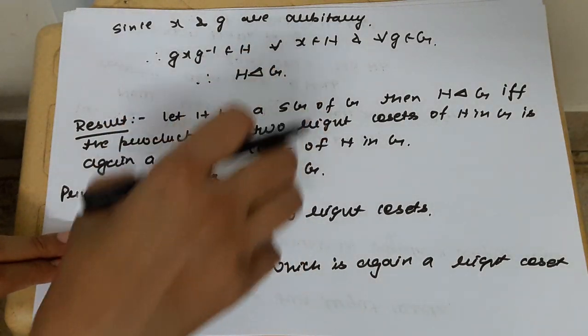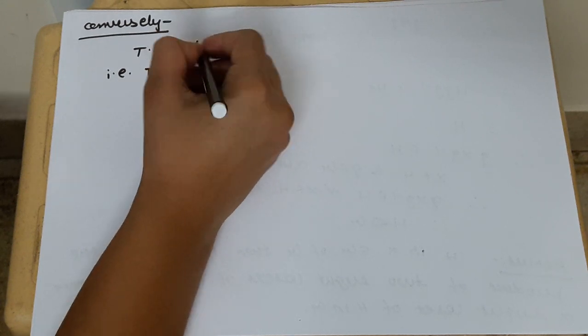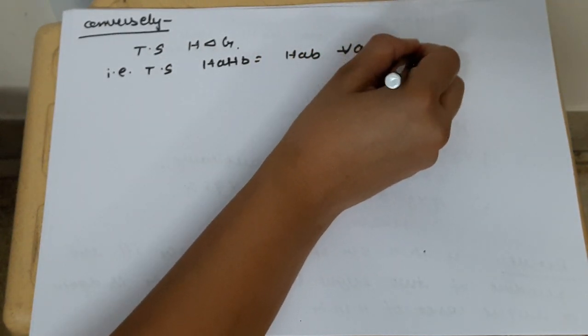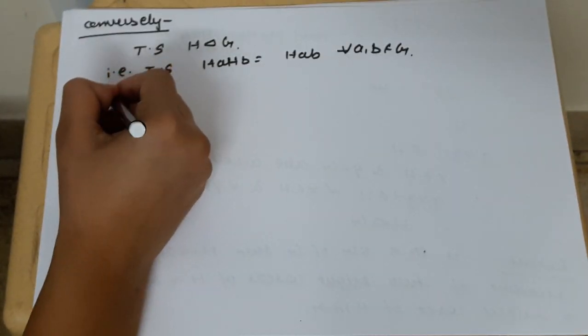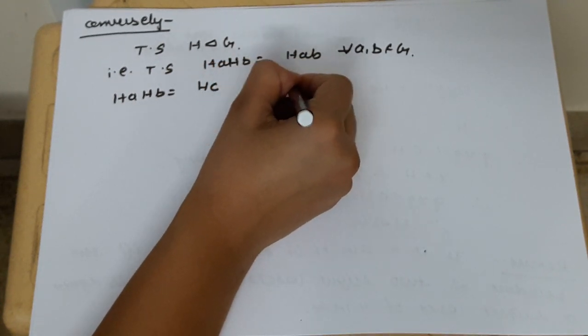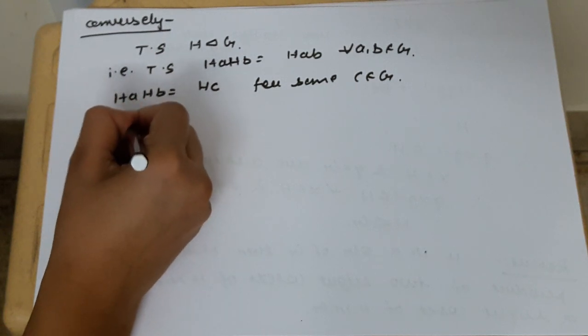Now for the sufficient part — the converse. We are given that the product of two right cosets of H in G is again a right coset of H in G. We have to prove H is a normal subgroup of G. For this, we will show the sufficient part of the previous theorem: that HA·HB = HAB for all A, B in G. By the given condition, HA·HB = HC for some C belonging to G. Now watch this step carefully. Consider AB.